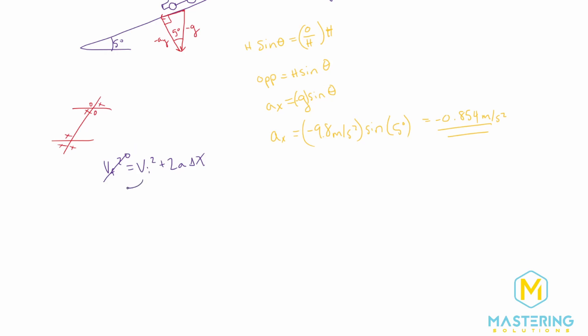Let's subtract v initial squared over. So we have negative velocity initial squared is equal to 2a times the delta x. Now we'll divide both sides of the equation by 2 times a. So we have delta x is equal to the negative initial velocity squared divided by 2 times the acceleration.